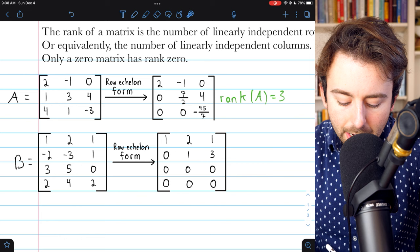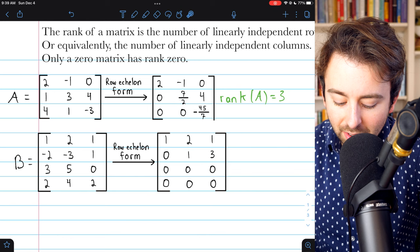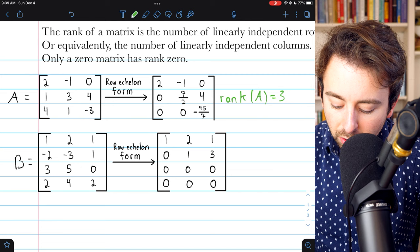Similarly, for this matrix B, if we put it into row echelon form, this is what we get. The number of linearly independent rows in B is the number of non-zero rows in the row echelon form. In this case, there are two non-zero rows, so the rank of B is two.